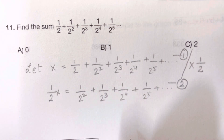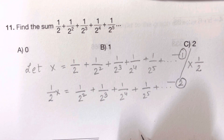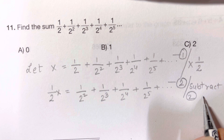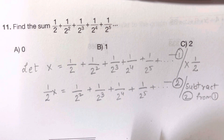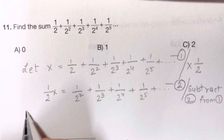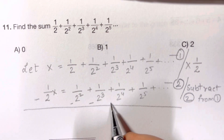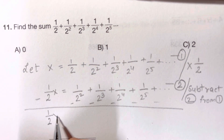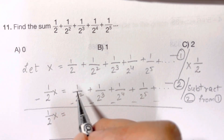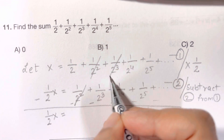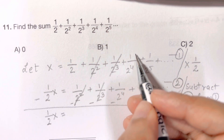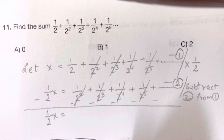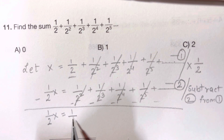Now we're going to subtract equation two from equation one. When you subtract everything: x minus half x gives you half x on the left. On the right, one half remains, then one over two squared minus one over two squared cancels, one over two cubed minus one over two cubed cancels, one over two raised to four cancels, one over two raised to five cancels — all of them cancel. So you're only left with half x equals one half.